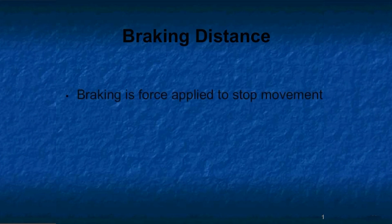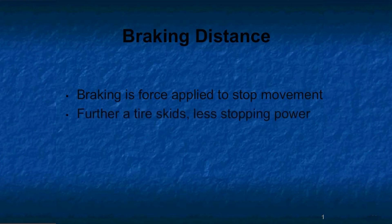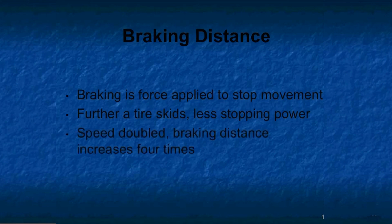Let's talk about braking distance. Braking is an artificial force that is applied to stop movement. This requires two applications: friction between the tires and the road, and friction between the brake shoe or pad and the brake drum or disc. The further a tire skids, more heat is produced and there will be less stopping power. Realization and reaction time for stopping the bus is proportional to the speed, and when speed is doubled, braking distance increases four times. Reaction time for braking averages three-quarters of a second. With hard, late braking, the driver manages traction poorly and risks skidding, and there is a danger of student injury inside the bus.